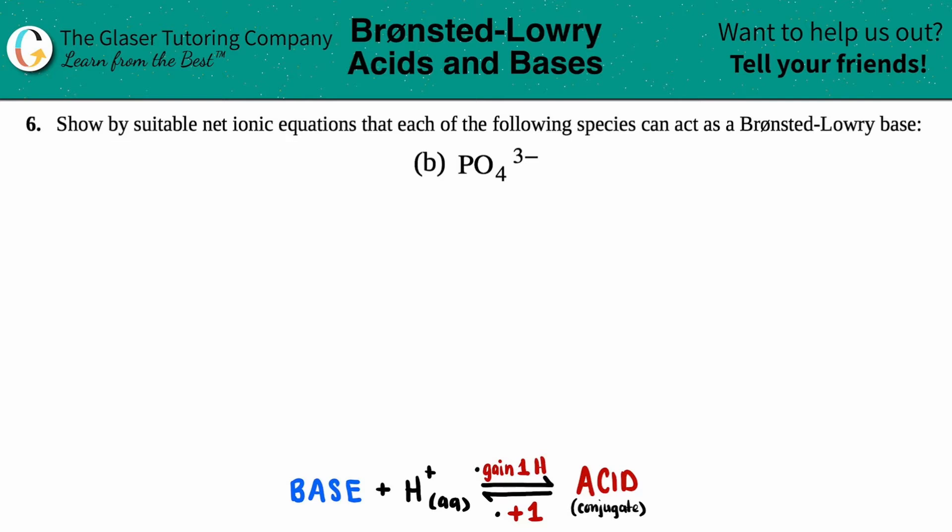Number six: show by suitable net ionic equations that each of the following species can act as a Bronsted-Lowry base. We have letter B out of the bunch.